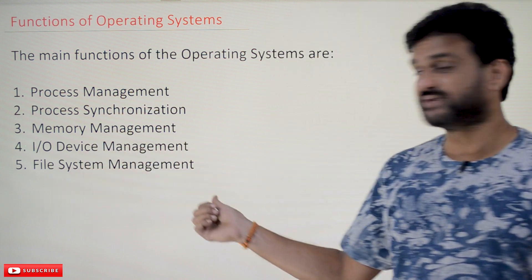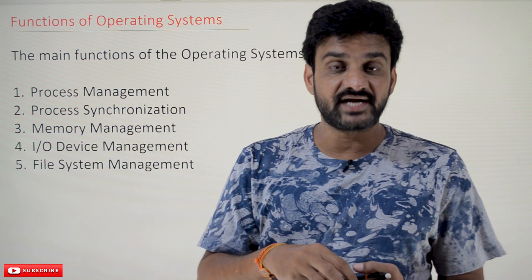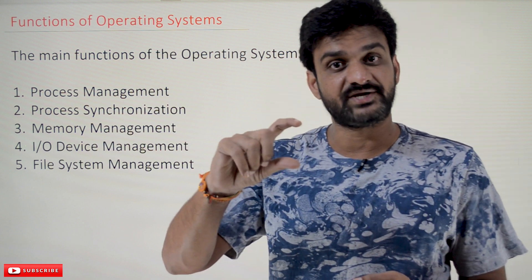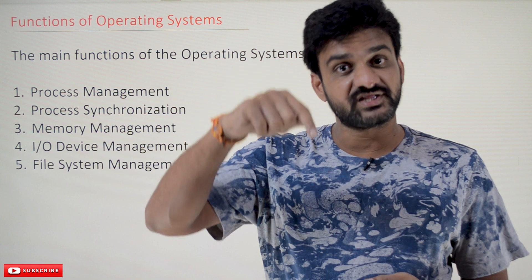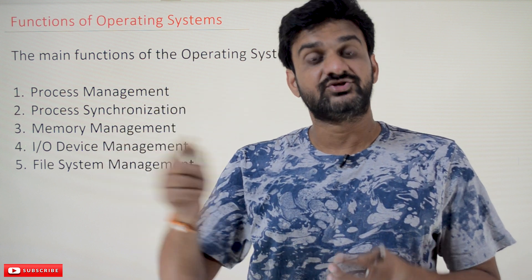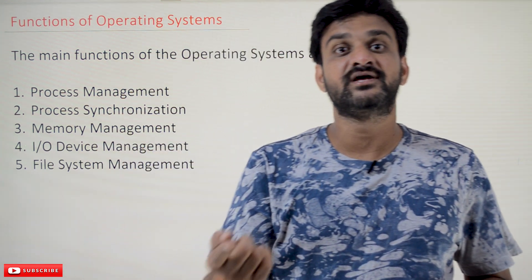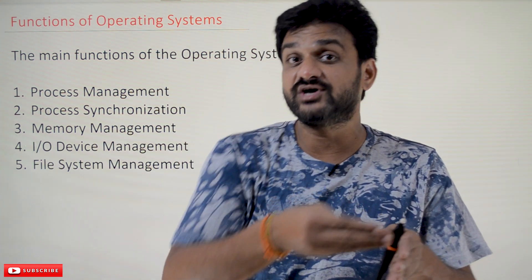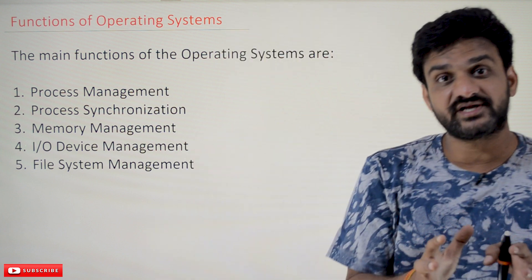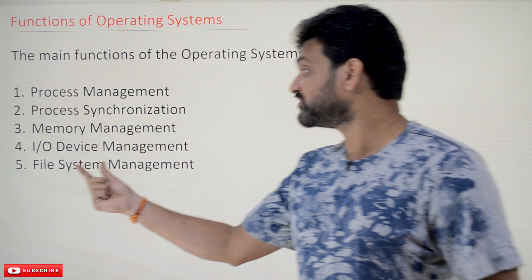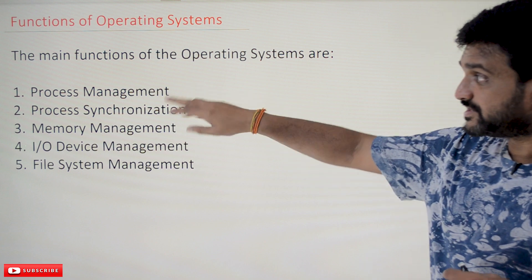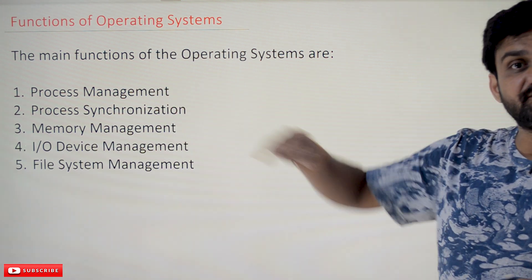The next one is file system management. Files are stored on the hard disk and organized into folders. Within a folder we can have multiple files and sub-folders. We are able to create a new folder, rename a folder — all these functionalities are functionalities of the operating system. File system management is another important functionality of the operating system.